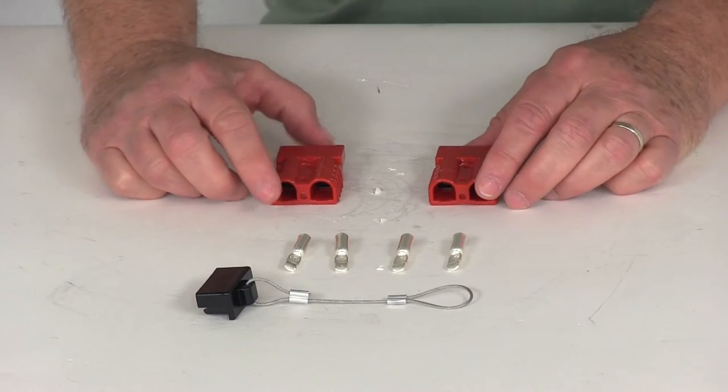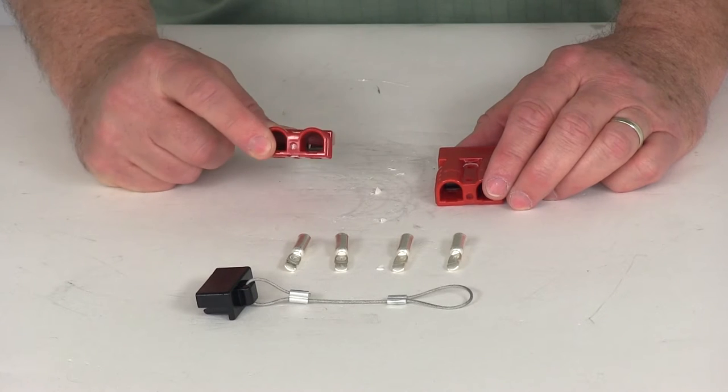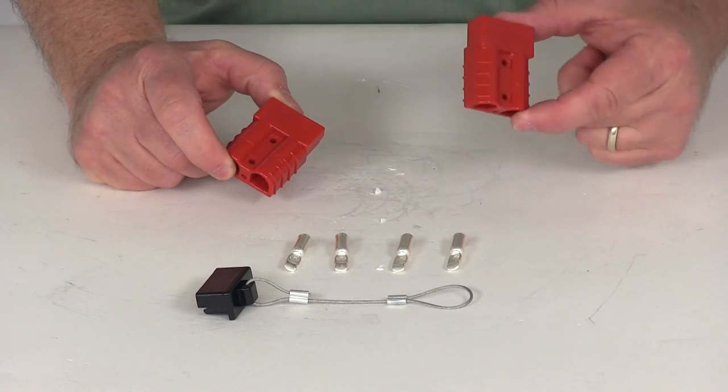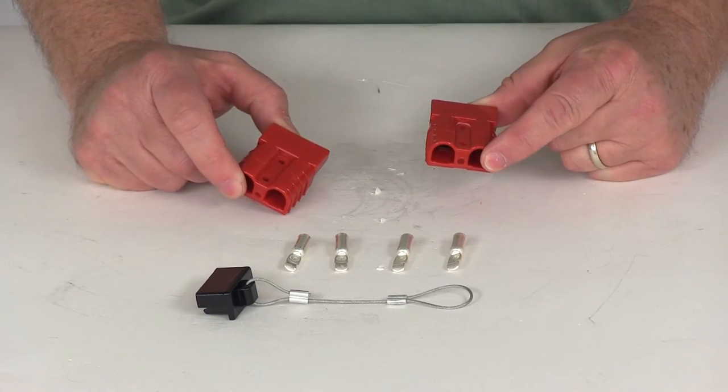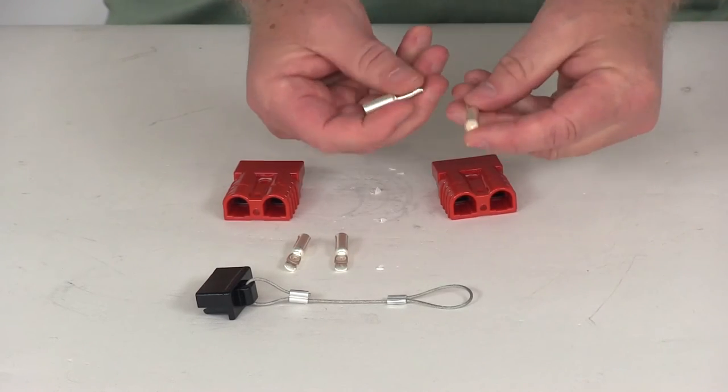So basically when you go to install these, one of these connectors will attach to the wires on your winch. The other one will connect to your power supply wires and you'll connect your wires using these terminals.